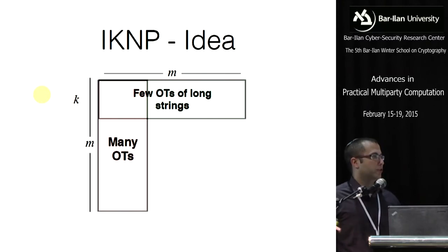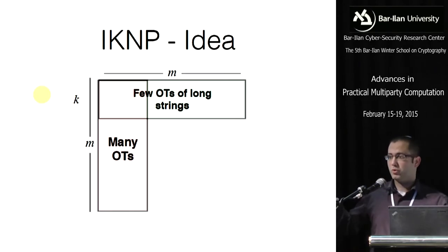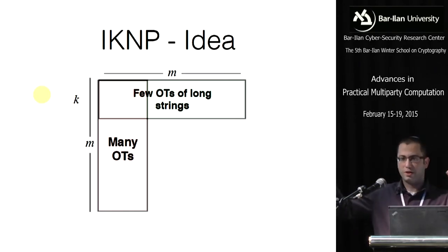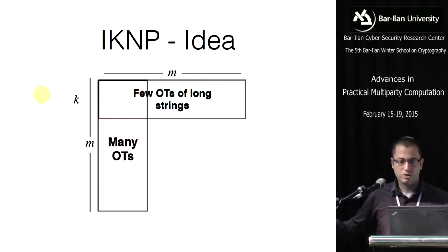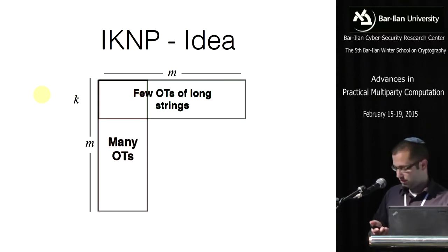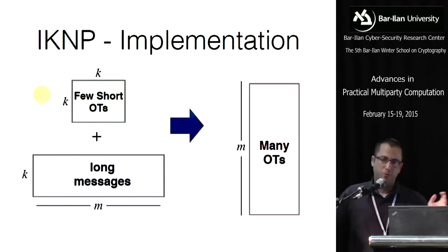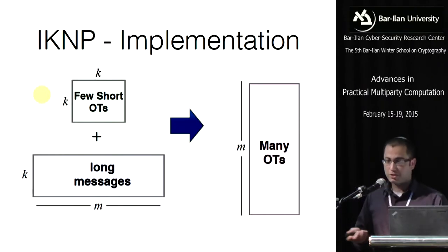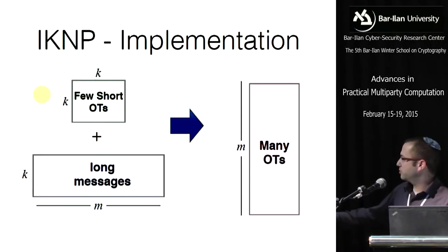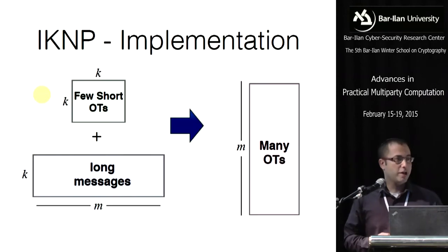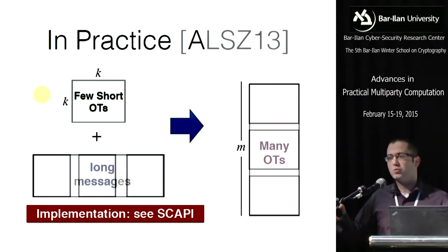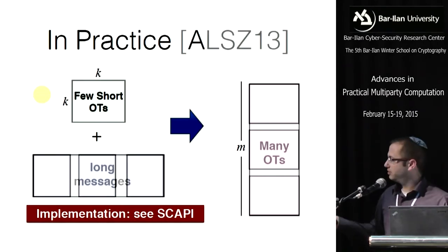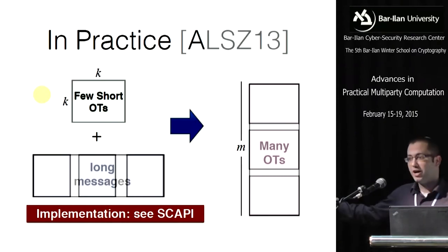Essentially, the protocol has two rounds: first an invocation of an OT oracle, then the actual transfer of the OTs. In practice, instead of doing OTs for long messages, we break them up and do OTs for completely random messages, then correct this using some additional transmission. We can also do this in parallel. We have optimizations of this protocol from a paper two years ago, and you can download and run it in Scapi, which Yehuda will talk about later today.